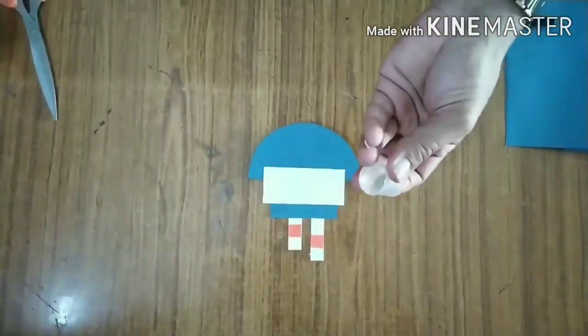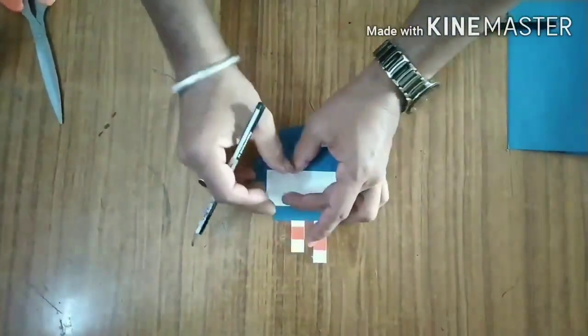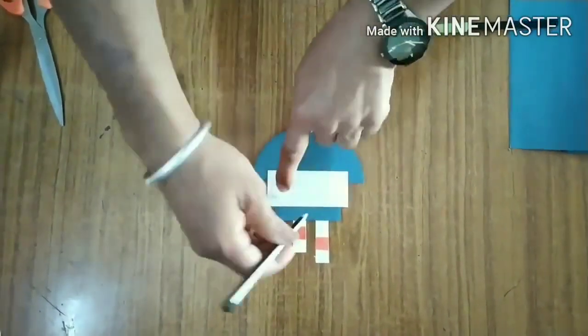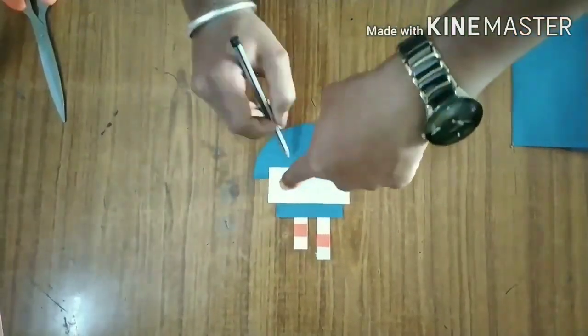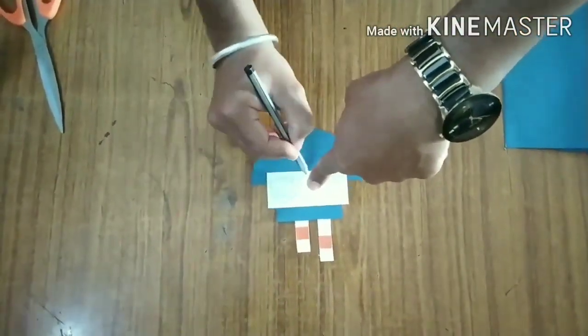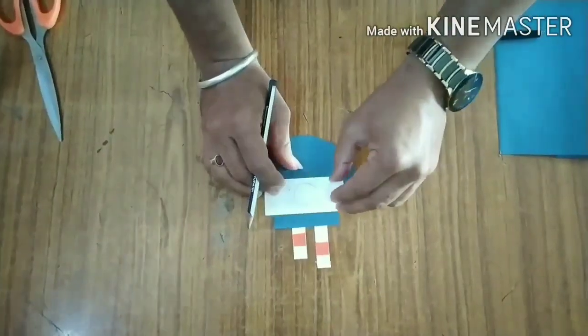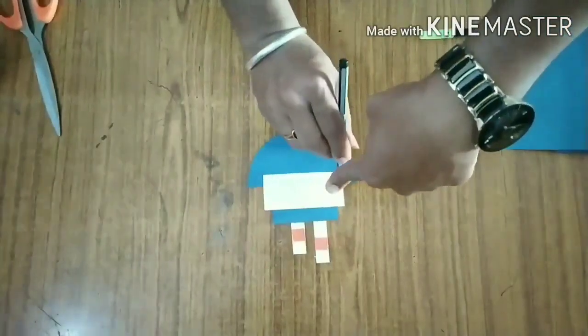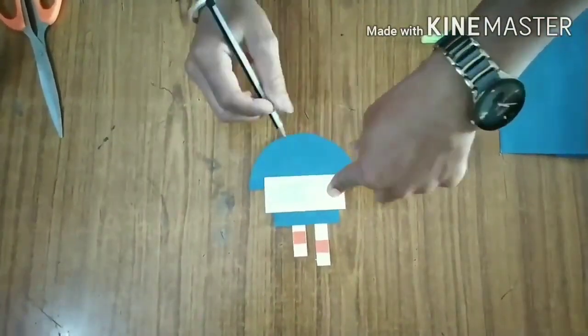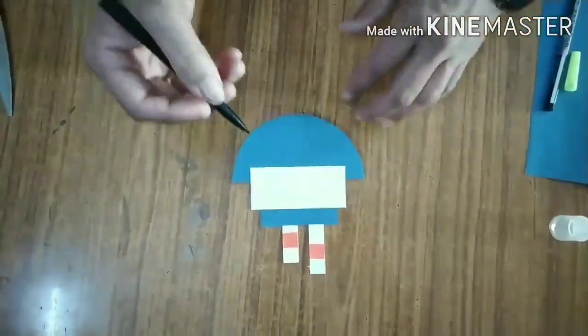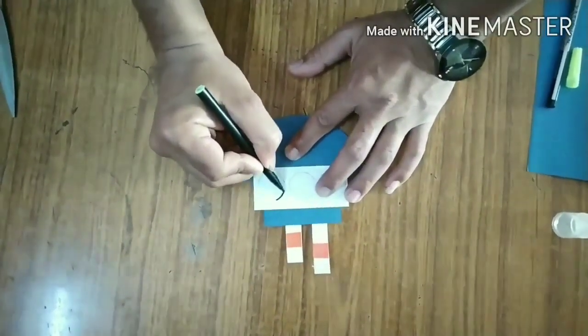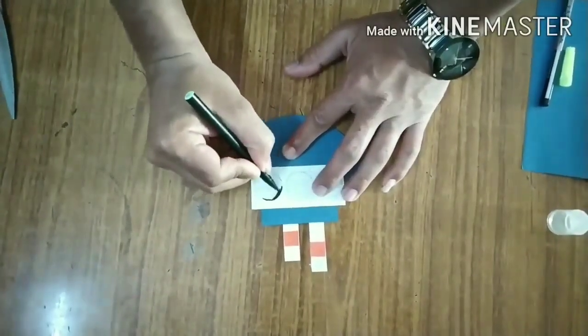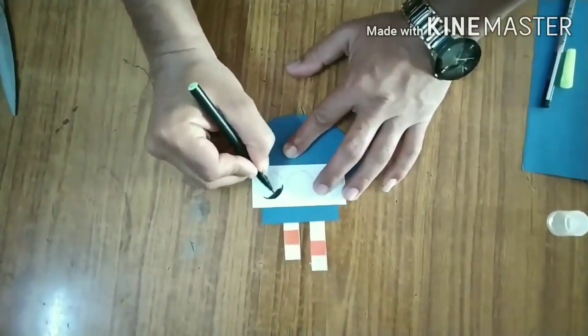Draw three circles on the white strip. Use black sketch pen to color the circles. Make a paper flag and paste it.